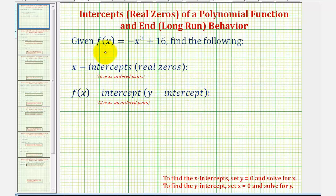When we have an equation given in function notation, as we see here, if it's helpful, we can replace f of x with y, so we could rewrite this as y equals negative x cubed plus 16. These two equations would be equivalent.